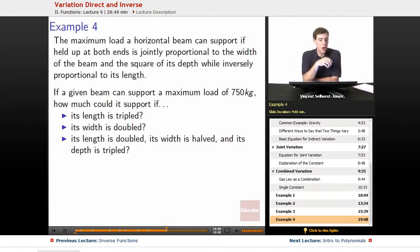Last example. The maximum load a horizontal beam can support if held up at both ends is jointly proportional to the width of the beam and the square of its depth, while inversely proportional to its length.